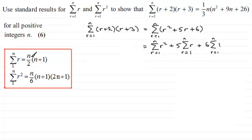Now we can use these standard results that we've got here. So for the first one then, we've got n over 6, times n plus 1, times 2n plus 1.